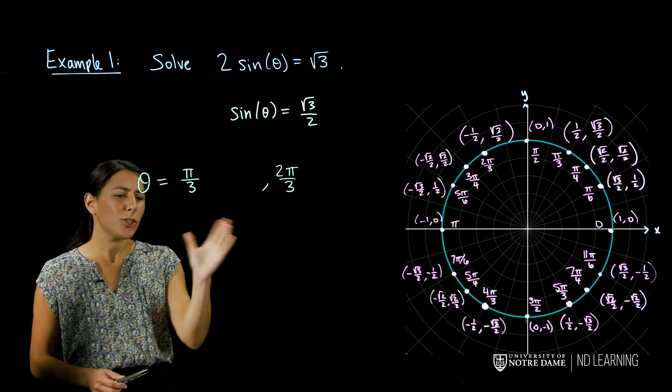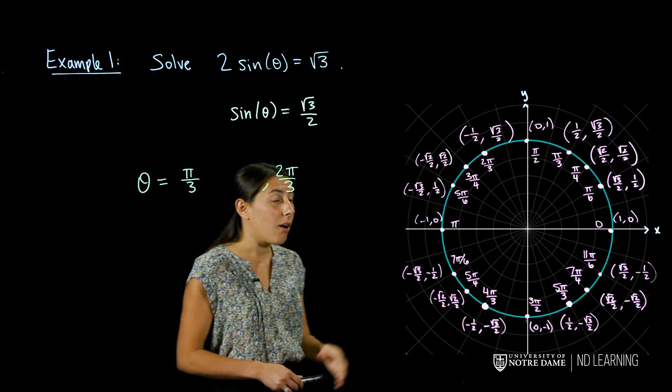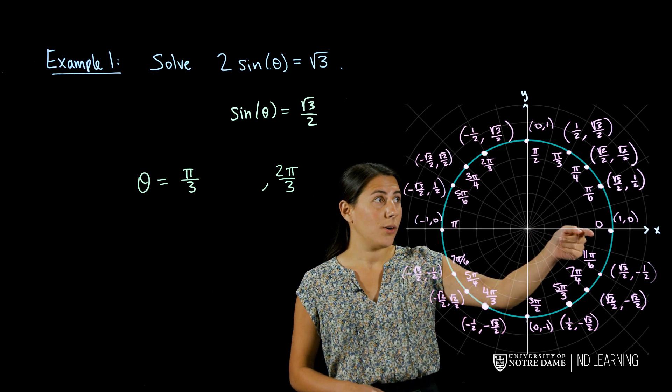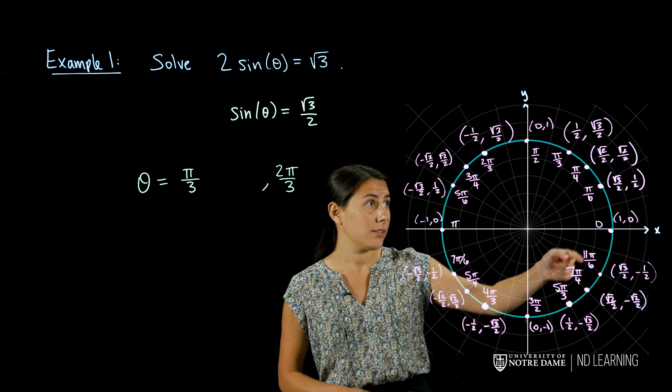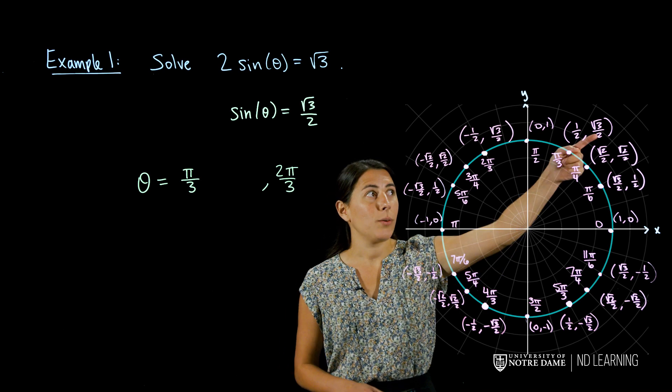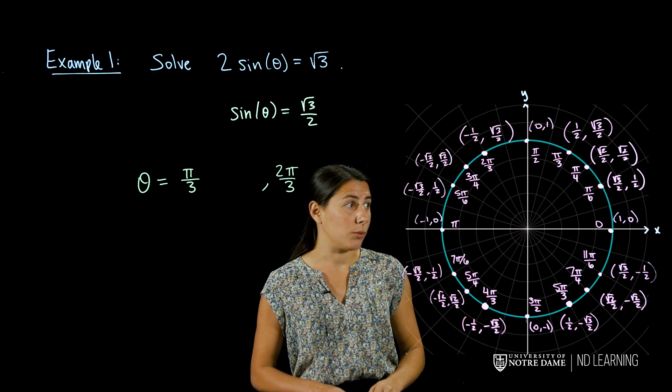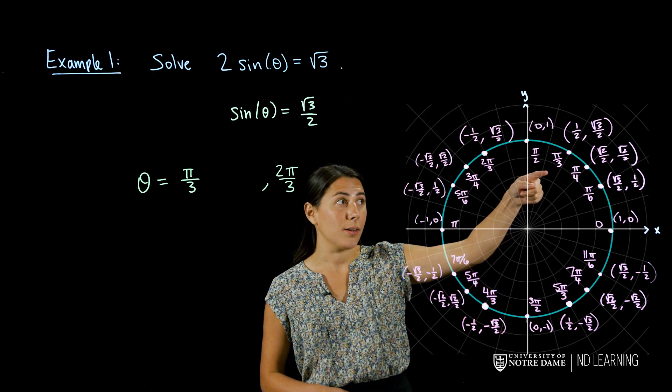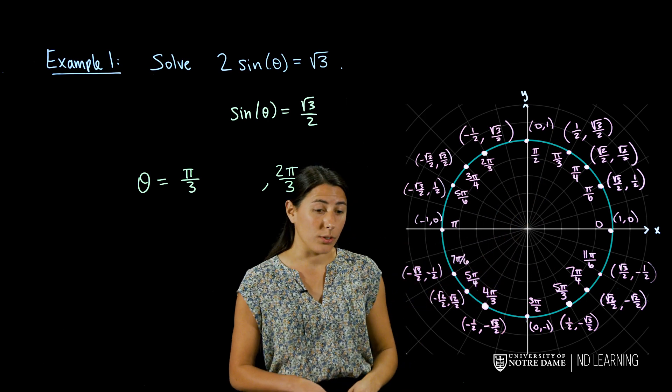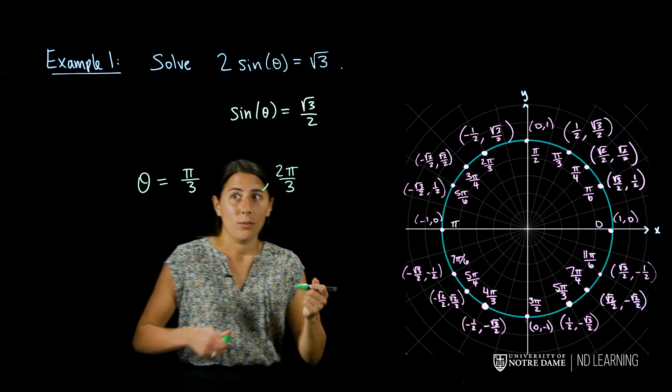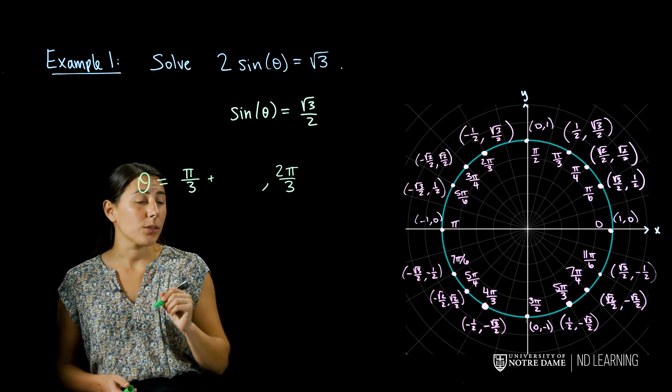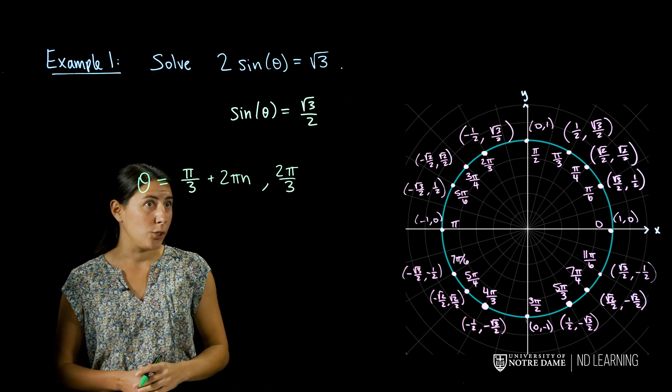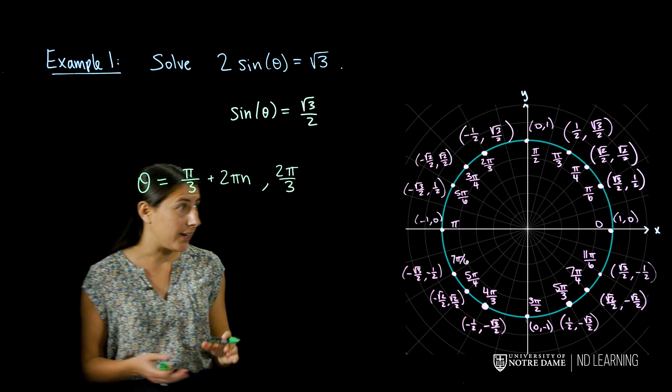But these aren't the only two solutions. I want all angles that have this value. So for example, if I went all the way around the unit circle and then to pi over 3, that would also have the same value root 3 over 2. If I went all the way around twice and then pi over 3, again it would have the value root 3 over 2. So really we want pi over 3 plus any multiple of 2 pi.